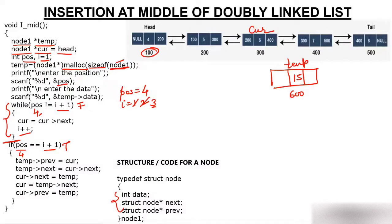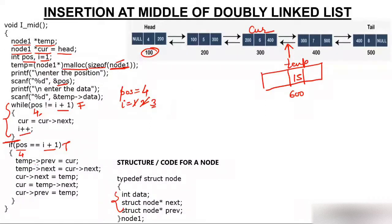Temp will keep current's address and also take the address that current is currently pointing to. First, temp->previous is set to current — current's address is 300, so the new node now points back to the node at 300. Then temp->next is set to current->next — current->next is 400, so 400 goes into temp->next, meaning the new node points forward to the node at 400. The job of temp's pointers is now finished.